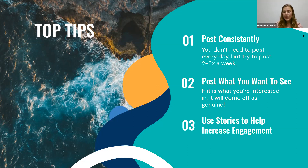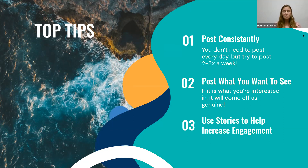Second, make sure to post what you want to see. If you're posting what you're genuinely interested in, people will most likely also be interested in it, and it will come off as more genuine and show that you're passionate about it. Third, use your stories to help increase engagement. Stories are another type of post that's only there for 24 hours — very popular on Instagram but available on Facebook too. On Instagram stories, you can do polls, ask questions, and all kinds of interactive things that automatically help increase your engagement.